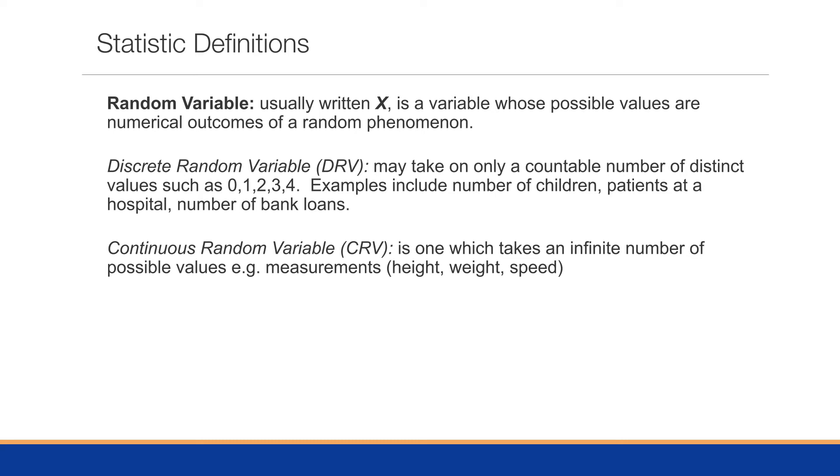A continuous random variable is one which takes an infinite number of possible values, such as height, weight, and speed. One of the things we say for a continuous variable is that the numbers between the numbers actually have meaning. For example, if we're looking at someone's height, we may say that someone is 54 inches, someone is 54 and a half inches, someone is 54.52 inches. The numbers between the numbers have meaning.